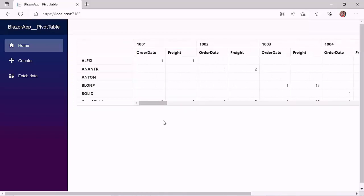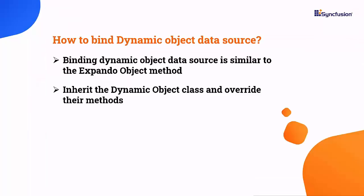Next, I will show you how to bind the dynamic object data source to the pivot table. Binding data to the pivot table using a dynamic object is similar to the expando object, with the main difference being that you must inherit the dynamic object class and override their methods.